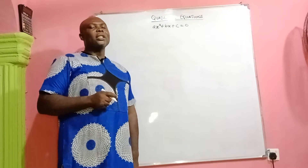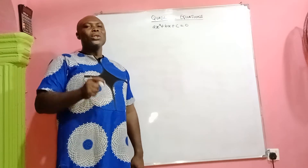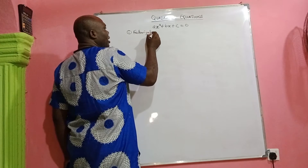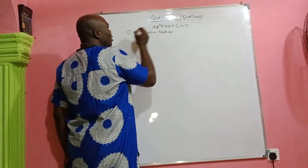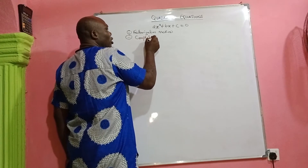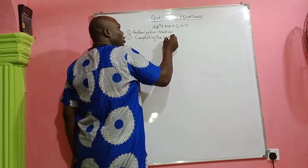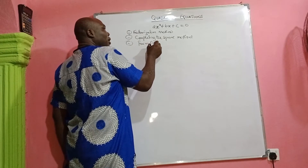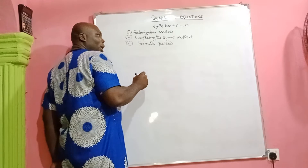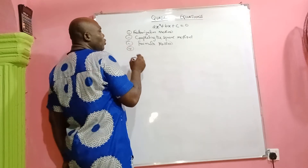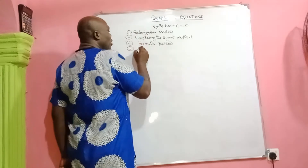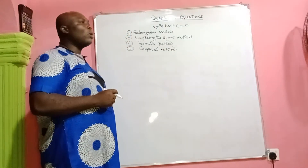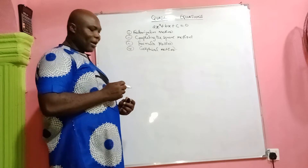The roots of a quadratic equation are usually derived using four methods. The first method is the factorization method. The second method is the completing the square method. The third method is the formula method — also called the almighty formula. The fourth method is the graphical method. We'll take all these methods one by one, and today we'll go straight into the factorization method.